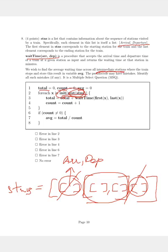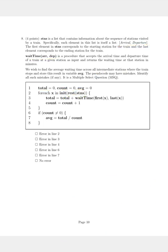Now let me just clear the screen. So for each x in init of rest of stations, total is equal to total plus the wait_time, which takes two parameters, that is the first element of x and the last element of x.